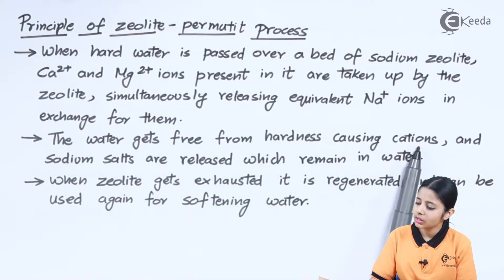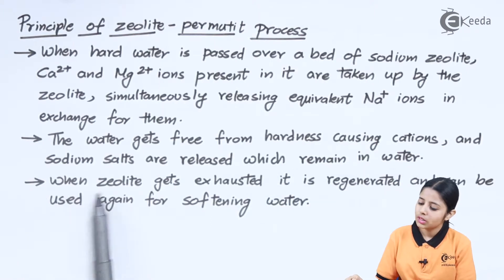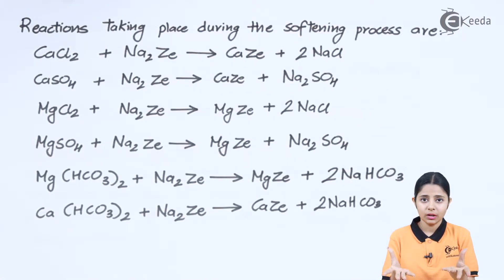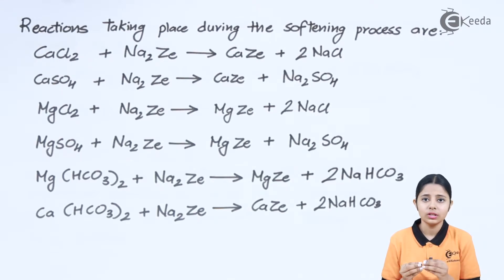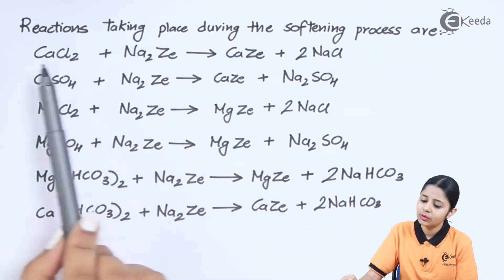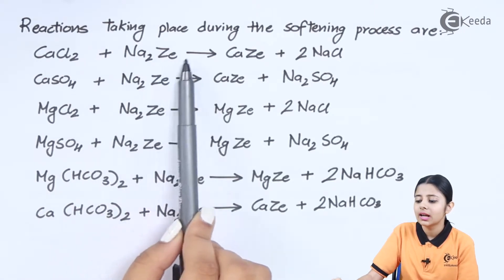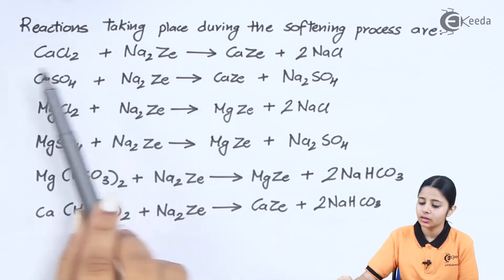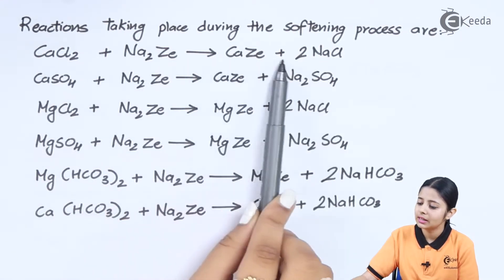The water gets free from hardness-causing cations, and sodium salts are released which remain in the water. When the zeolite gets exhausted, it is regenerated and can be used again for softening water. The first reaction is: CaCl2 + Na2Ze → CaZe + 2NaCl. Here 'Ze' stands for the zeolite structure. This is a double displacement reaction — the zeolite exchanges its Na ions for Ca ions. CaCl2 reacts with Na2Ze to form CaZe and 2NaCl. The reaction is balanced: 1 Ca, 2 Cl, 2 Na, and 1 zeolite on each side.